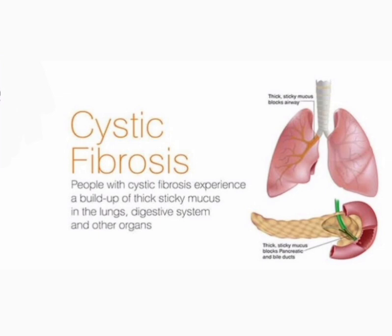Nutritional history includes: type of feeding — breast, artificial, or weaned; amount; any special food; any defect in mouth such as palate or lips; do they have a food diary; and measurements and growth chart. This provides detail about type of feeding, breast, artificial, or weaned, amount, special food, mouth defects, food diary, and growth chart.